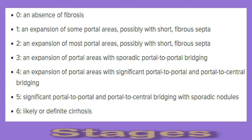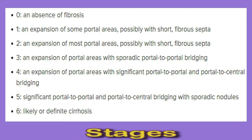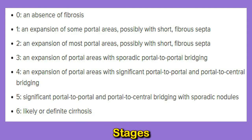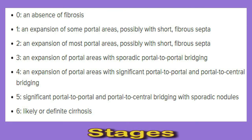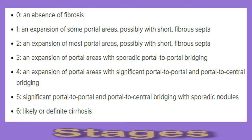On the Ishaq scale: 0 is absence of fibrosis; 1 is expansion of some portal areas, possibly with short fibrous septa; 2 is expansion of most portal areas, possibly with short fibrous septa; 3 is expansion of portal areas with sporadic portal-to-portal bridging and portal-to-central bridging; 5 is significant portal-to-portal and portal-to-central bridging with sporadic nodules; 6 is likely to definite cirrhosis. Using the Ishaq scale, the most advanced stage before developing cirrhosis is stage 5.